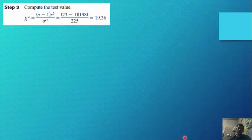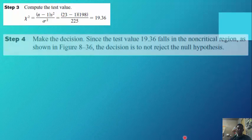Step 3: Compute the test value using the formula. Substituting: (23 minus 1) times 198, all over 225, gives a value of 19.36.